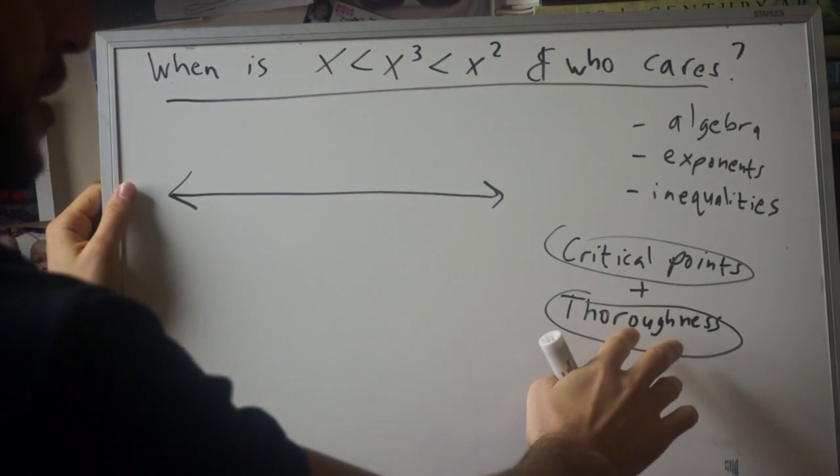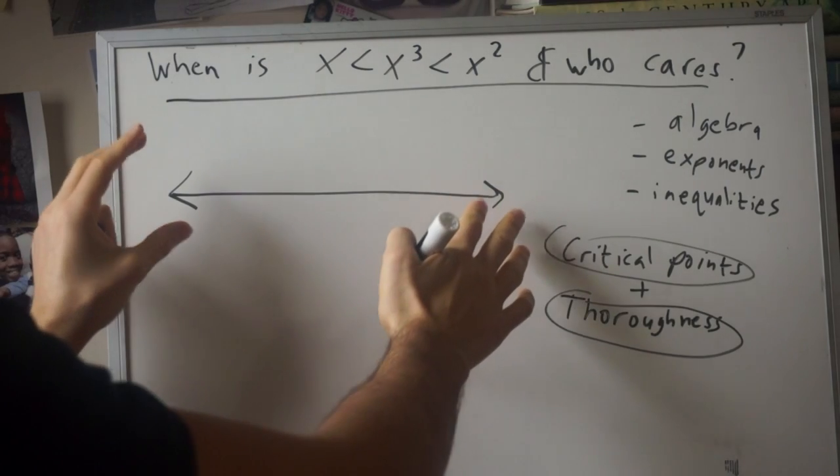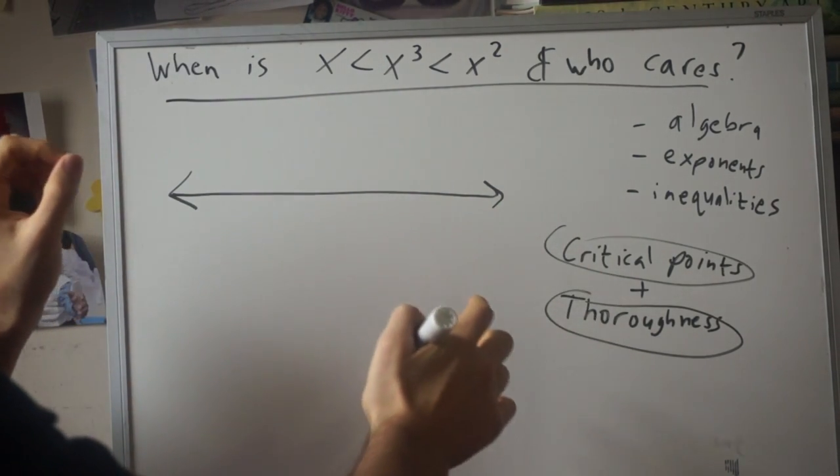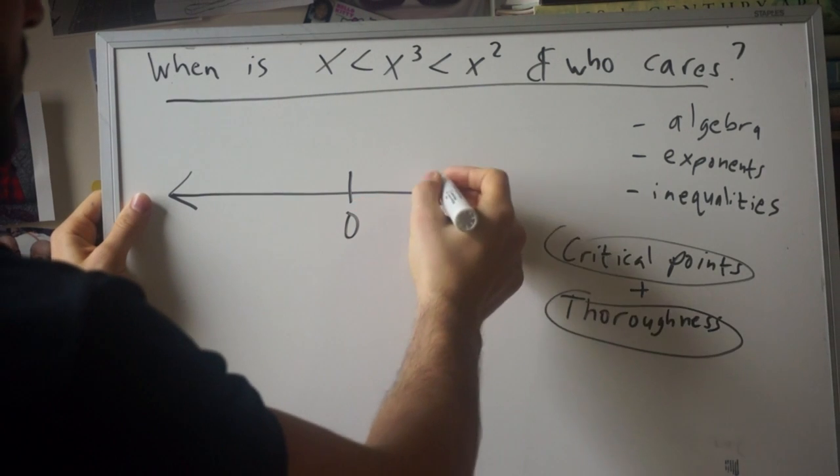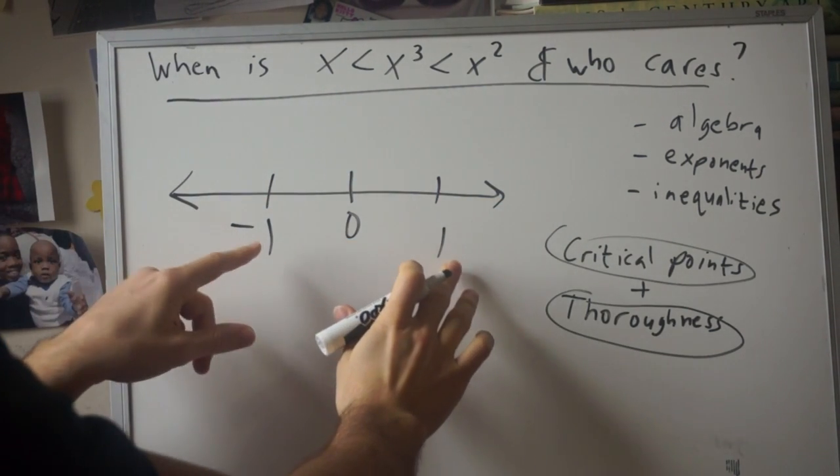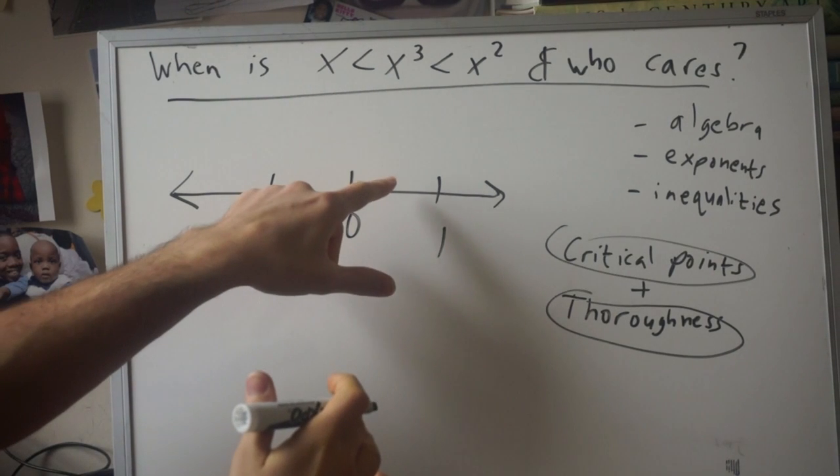So to be thorough, we're going to create a number line here, and from experience I just know that the interesting points are zero, one, and negative one. How do I know this?